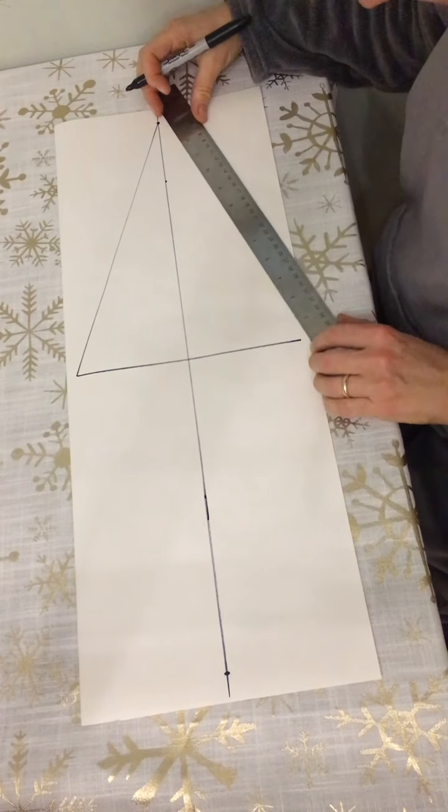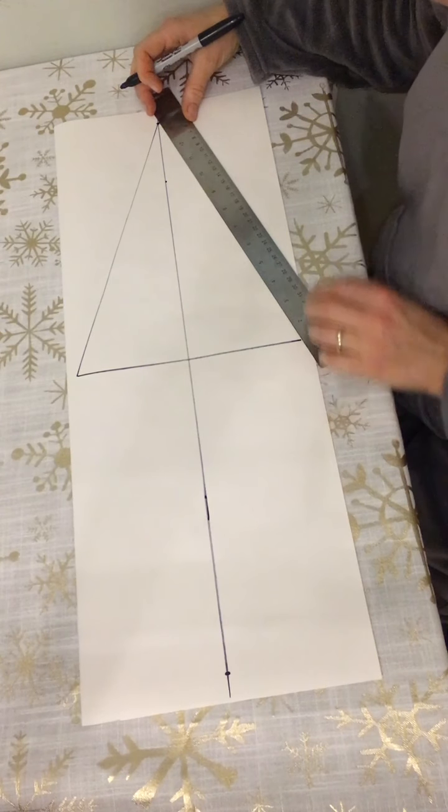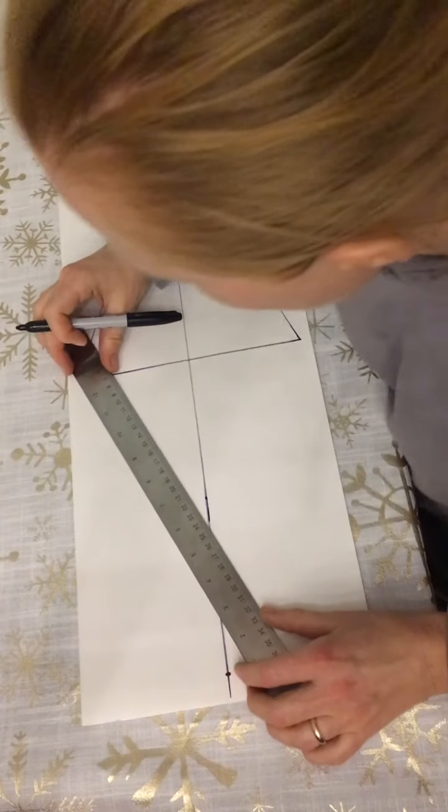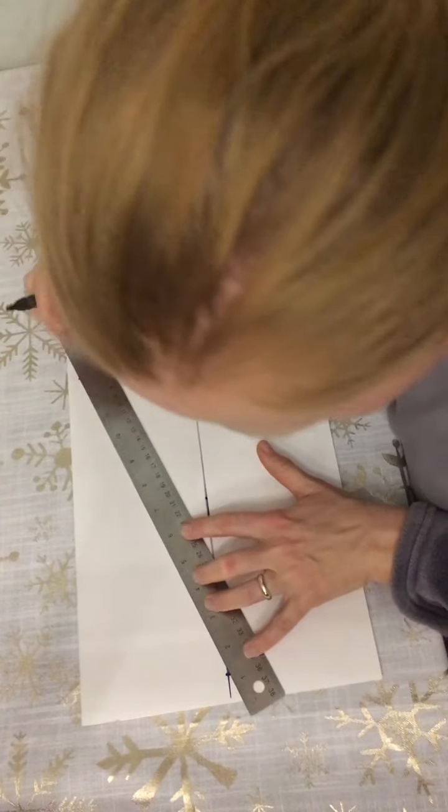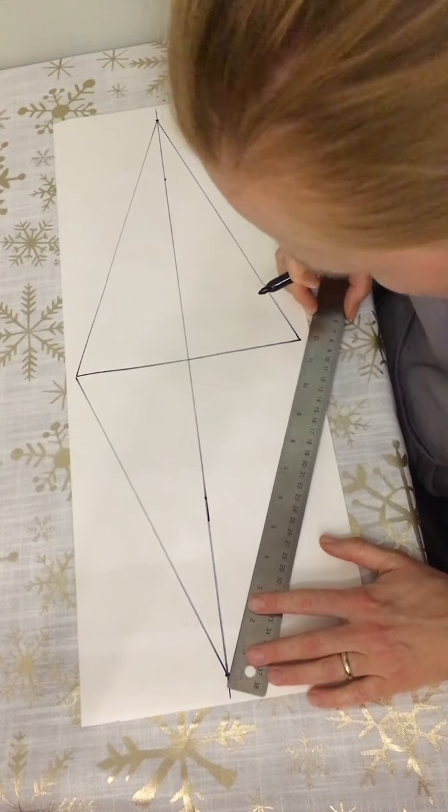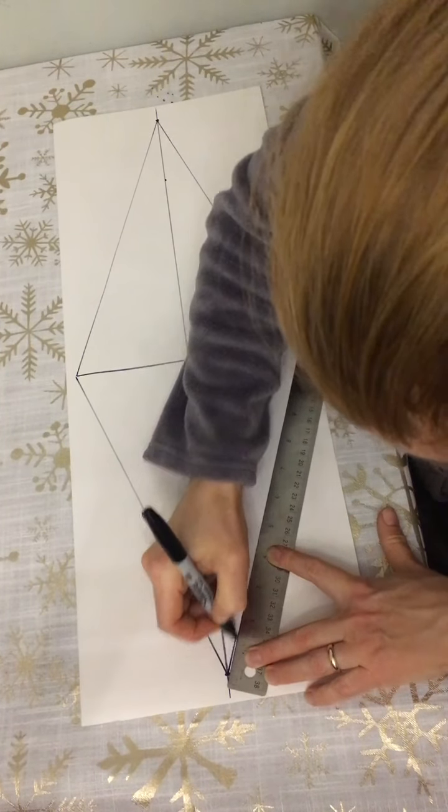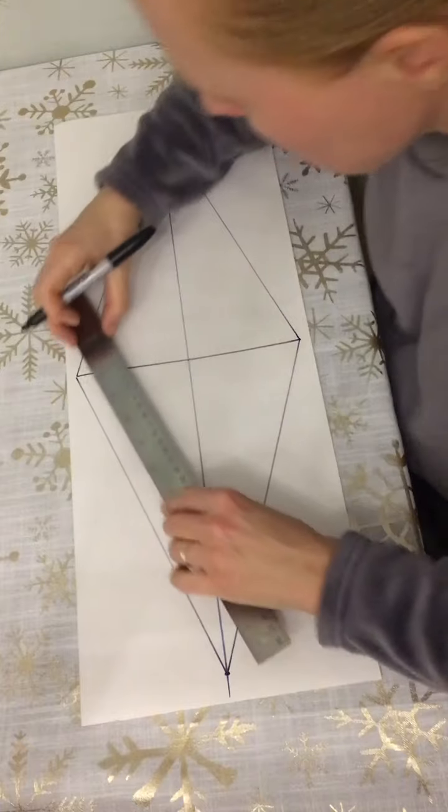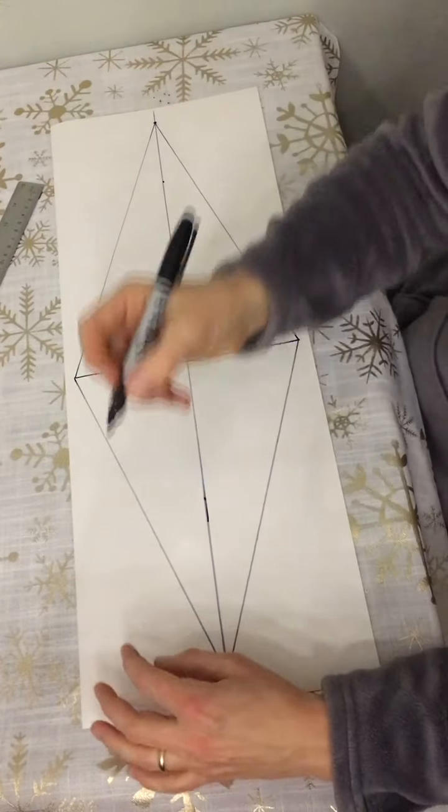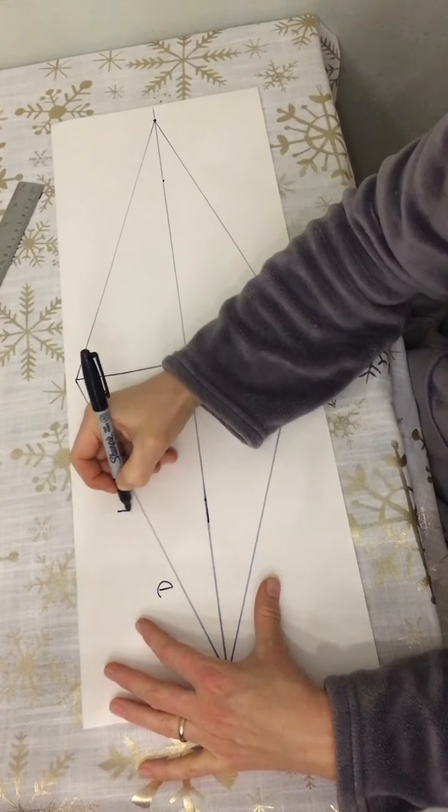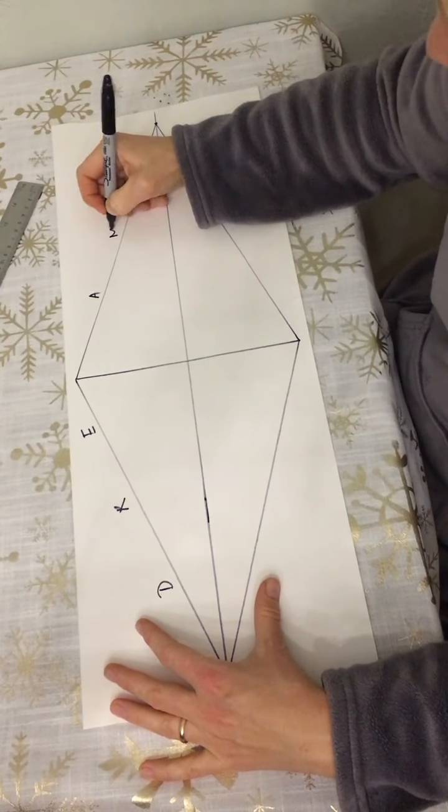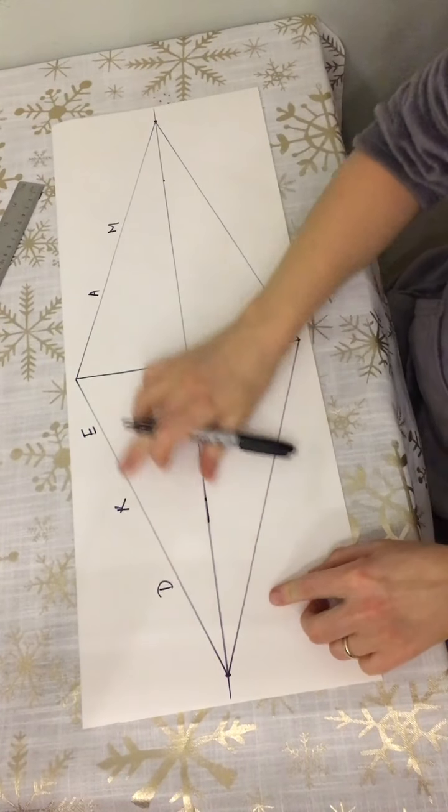After I'm done with that, I'm going to write my word right above this diamond shape. My word is 'dream' so it has five letters, and I like to write the word above to help me with placement.